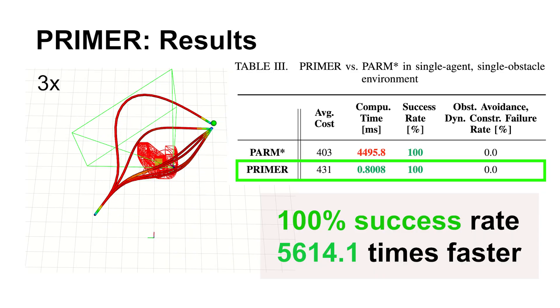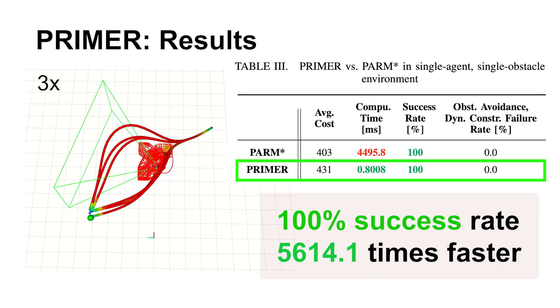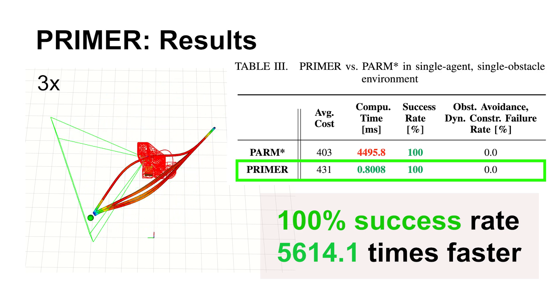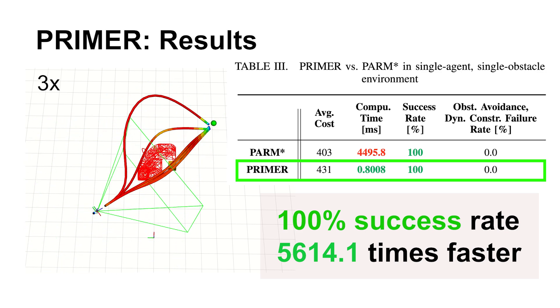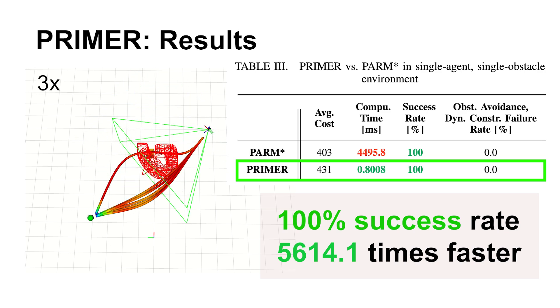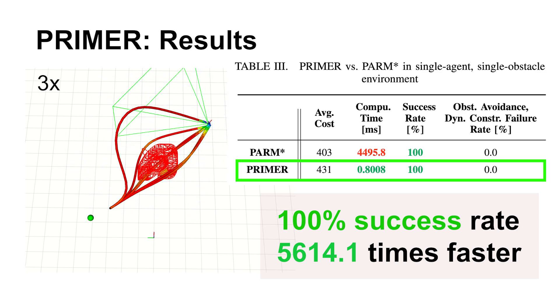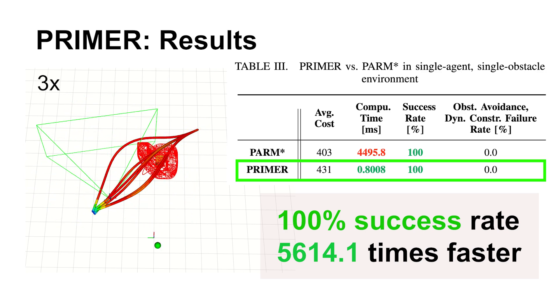First, we show results for the single-agent and single-obstacle case. As shown in the table, Primer achieves a 100% success rate and is more than 5,600 times faster in computation time compared to its expert, PARMSTAR. The performance is comparable, with no obstacle avoidance failures or dynamic constraint violations.